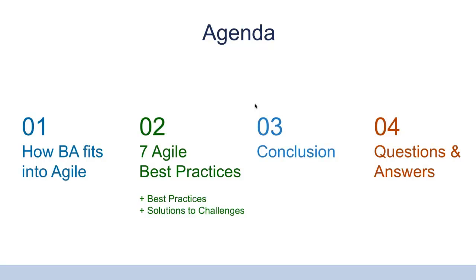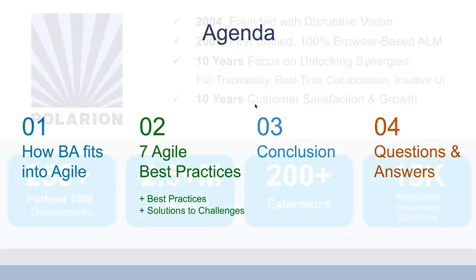Then we will move to the core of our discussion by exploring the 7 Agile Best Practices for BAs. The discussion is organized into best practices, but also challenges that you should be aware of, and the way our customers and also our teams have been able to address those challenges — because Polarion follows the Agile methodology. At the end, after our conclusion, you'll have about 10 minutes for a Q&A session. Please, any time, just use the Q&A panel to fire your questions.